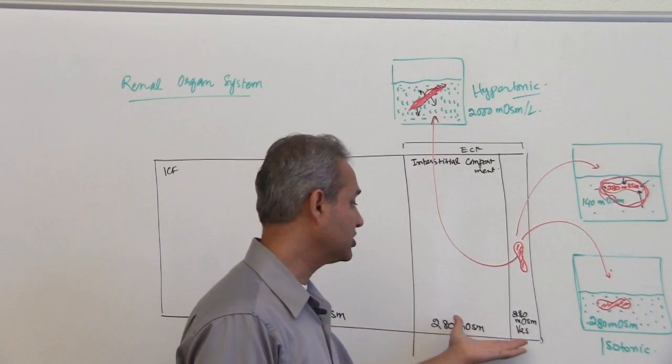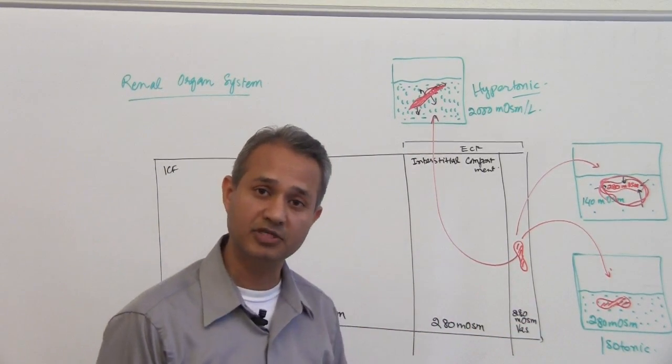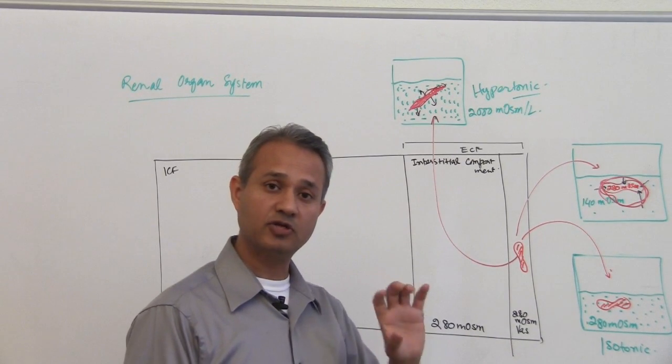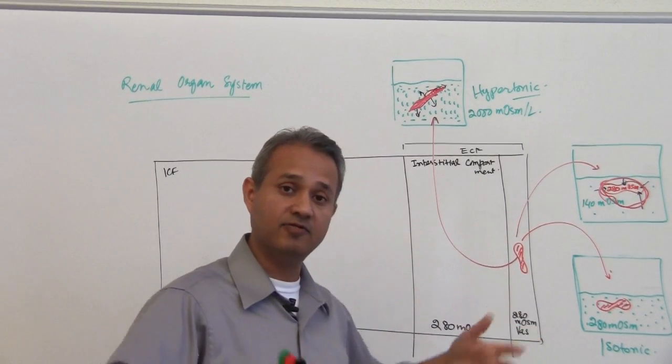If you just want to increase the patient's extracellular fluid volume, for example you are trying to maintain the blood pressure of a patient, give him isotonic solution. Isotonic solution would immediately sit in the extracellular fluid and increase the volume.